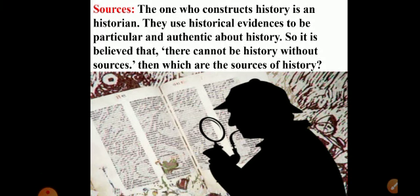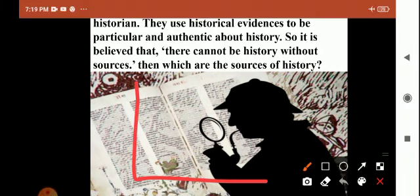The next topic is about the sources of history and who constructs history. One who writes history is not necessarily a historian — one who constructs history using historical evidence is a historian. That evidence must be authentic, meaning true. It is believed that there cannot be history without sources.